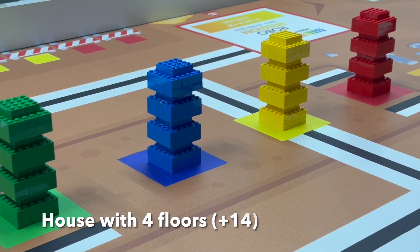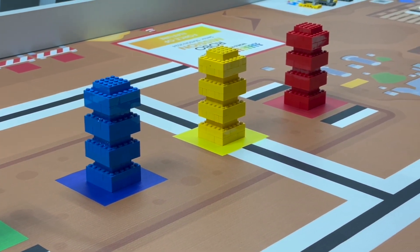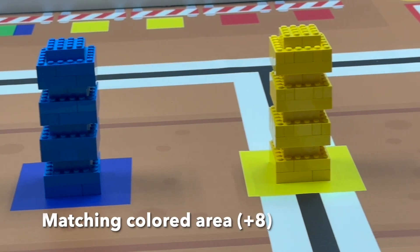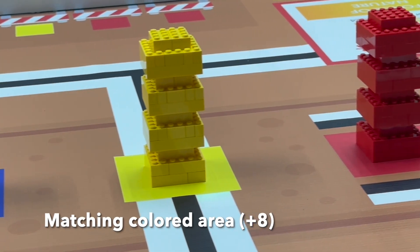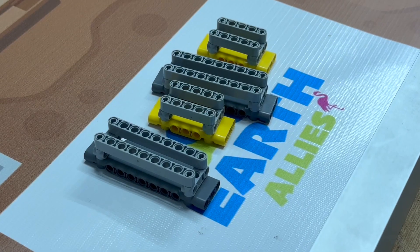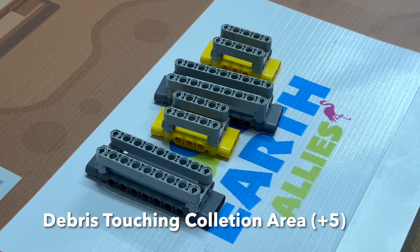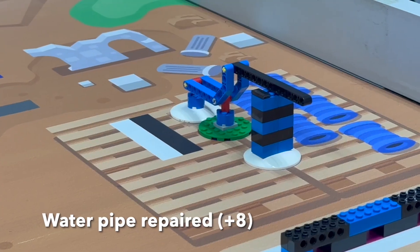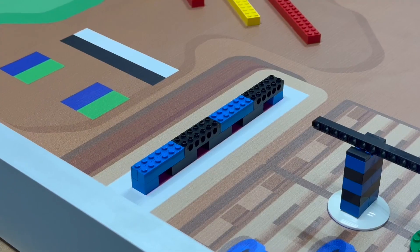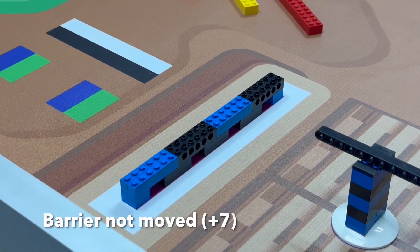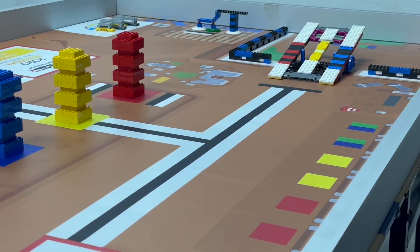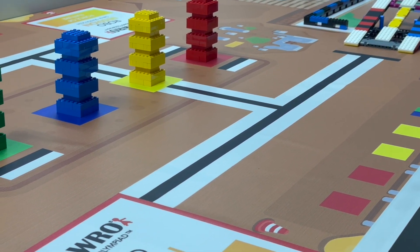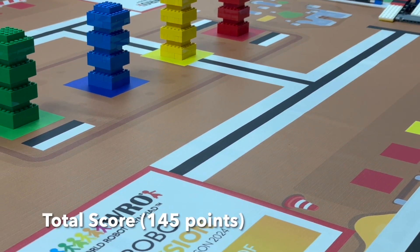House with four floors: 14 points each. Additionally, house with four floors with the color matching the colored area: 8 points each. Debris touching the collection area: 5 points each. Water pipe repair: 8 points each. Barrier not moved or damaged: 7 points each. The maximum score for the WRL 2024 Senior High Force of Nature will be 145 points in total.